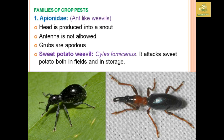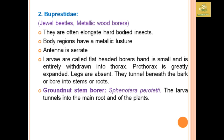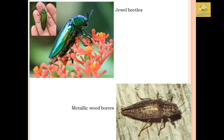Buprestidae comprises jewel beetles and metallic wood borers. They are often elongated, hard-bodied insects with a metallic luster. Antennae are serrated. Larvae are called flat-headed borers, with the head small and entirely withdrawn into the thoracic region. The prothorax is generally expanded and legs are absent. Larvae tunnel beneath the bark and bore into stems or roots. An example is the groundnut stem borer, Sphenoptera perotetti, where larvae tunnel into the main root causing plant death and drying.